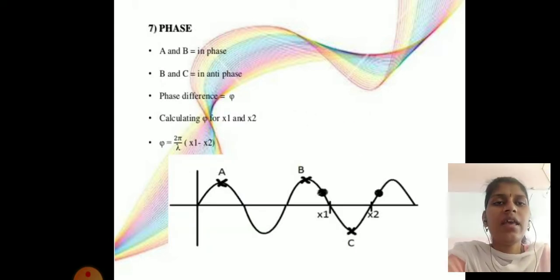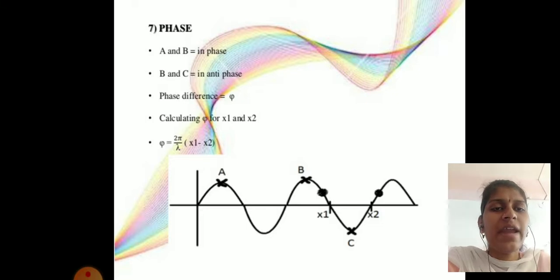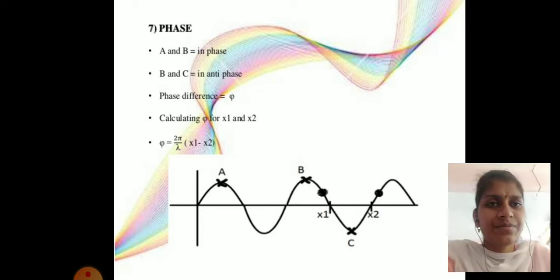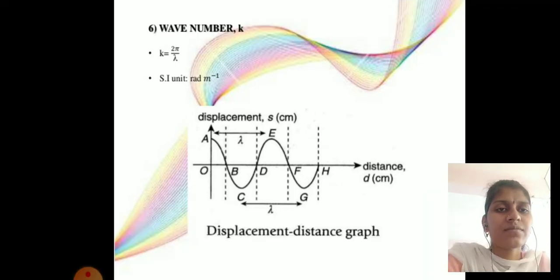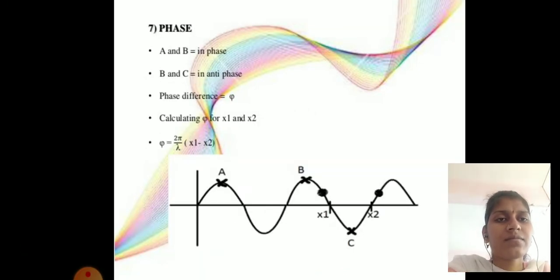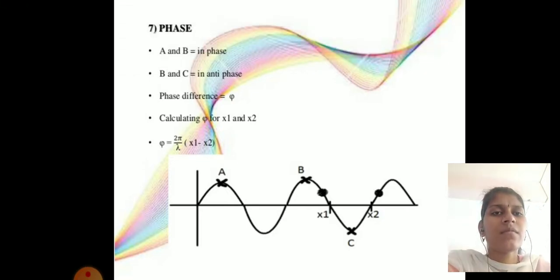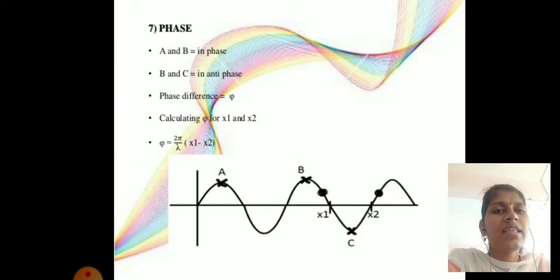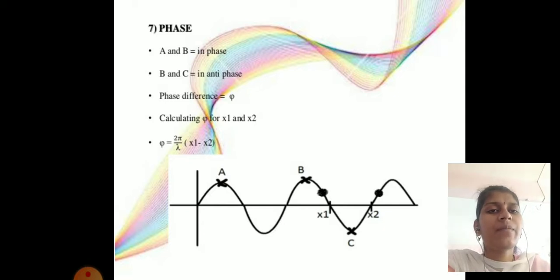Next parameter is phase. From the graph, points A and B are in phase, while B and C are in anti-phase. A and C are also in anti-phase.